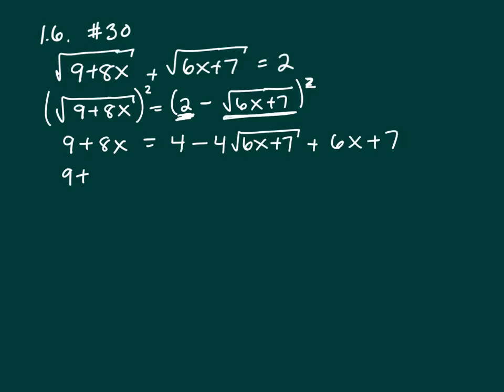Now let's combine like terms on both sides. So that's going to be 11 because 7 plus 4 is 11 minus 4 square roots of 6x plus 7 plus 6x.